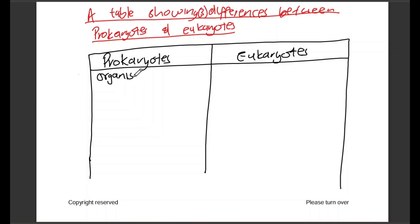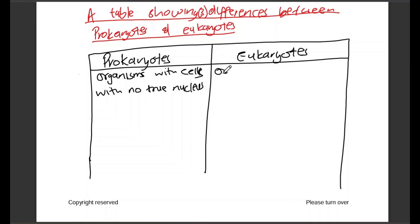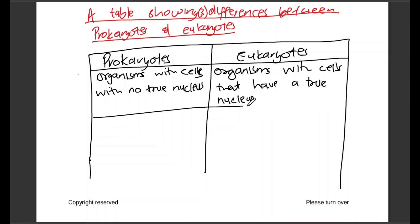Prokaryotes are organisms with cells that do not have a true nucleus. On the eukaryote side it is the opposite: organisms with cells that have a true nucleus. In the same row you compare the same characteristic — we are speaking about the nucleus in this row. This side: no true nucleus. That side: true nucleus. You can't speak about the nucleus on one side then speak about something else on the other. Underline to show we are done with this comparison.